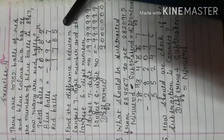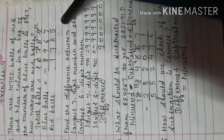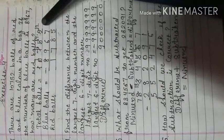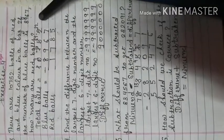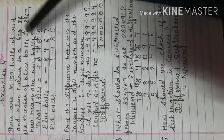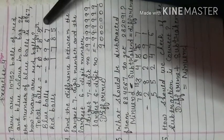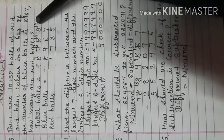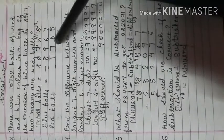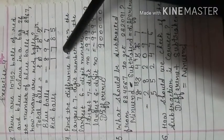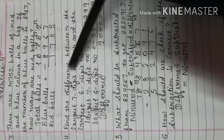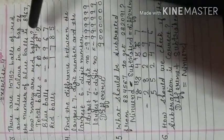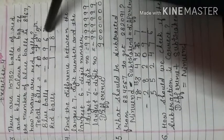For this, you will write down the total number of balls, which is 10,752, and subtract the blue balls, 8,967, from it. After subtraction you get the answer, which is 1,785. Always remember to start subtracting from the right side.